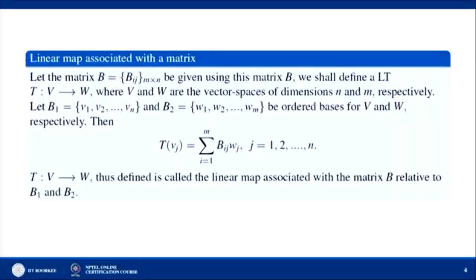If a linear map is known and the bases are known, then we can find the corresponding matrix. Now, conversely, if a matrix is known and the bases are known, can we find the corresponding linear map from V to W? The answer is yes. Let us see how by example.